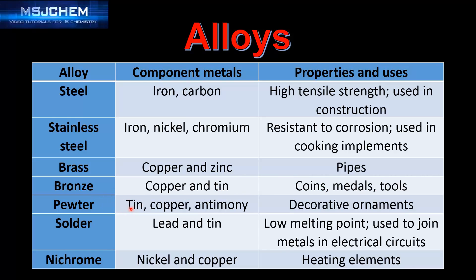Pewter is made of tin, copper, and antimony, and it's used for decorative ornaments. Solder is made of lead and tin; because of its low melting point, it's used to join metals in electrical circuits.